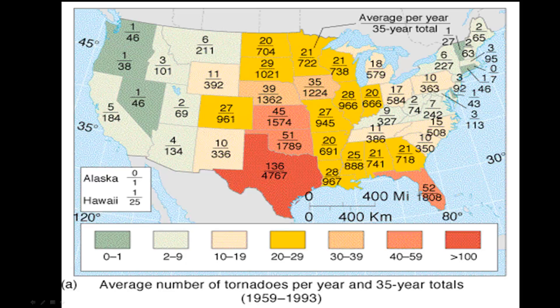I want us to imagine that we're in the United States Congress and we're trying to propose that there needs to be a national tornado center. We want FEMA, the Federal Emergency Management Agency, to make a national tornado center for quick response and analysis of tornadoes. If we look at this map, we can see that tornadoes are plaguing the heartland of the United States the most.